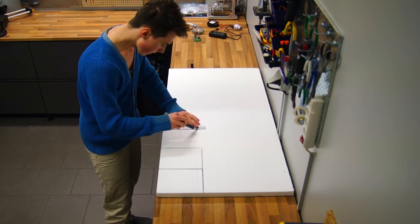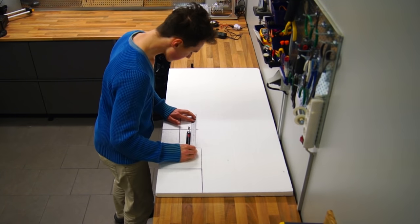I used a black marker to trace out the parts on the foam and cut them out using a utility knife.